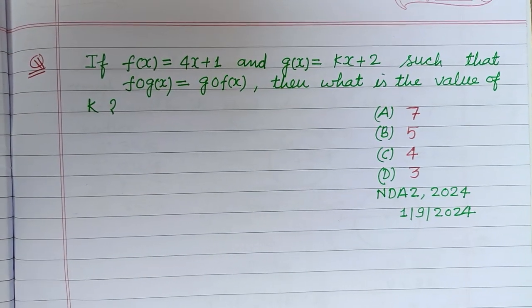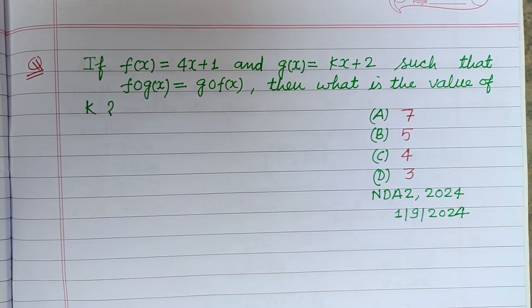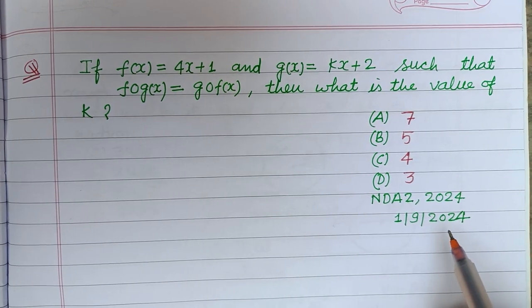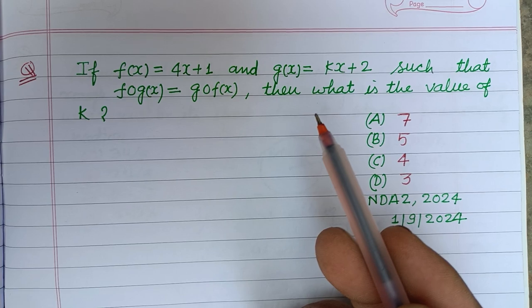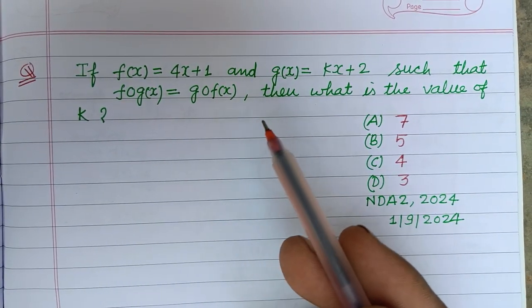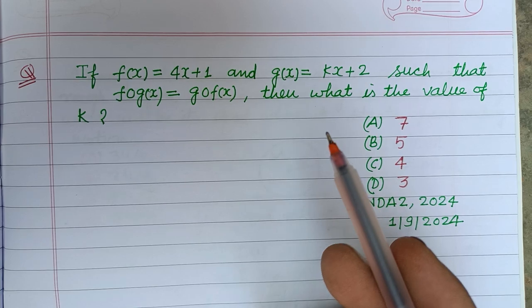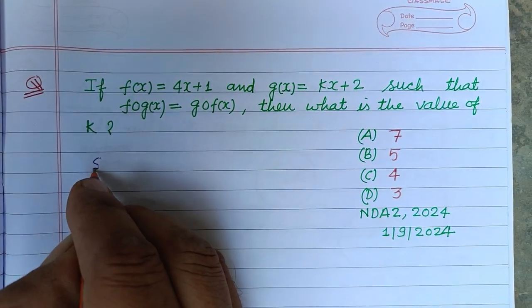Hello viewers, welcome to this YouTube channel. Question from NDA 2 2024: If f(x) equals 4x plus 1 and g(x) is kx plus 2 such that f∘g(x) equals g∘f(x), then what is the value of k?